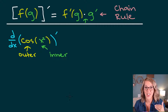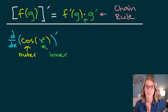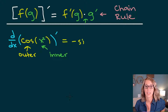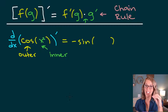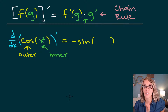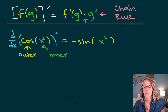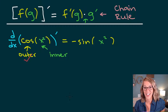Watch as I work this. I first want to start by taking the derivative of my outer function. The derivative of cosine is negative sine. I take the derivative of the outer function and leave everything else — so this is with respect to the inner function. I leave the x squared. At this point, I am done with the outer function — outer function check.